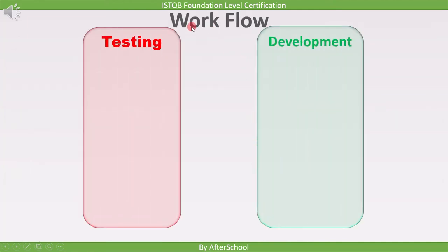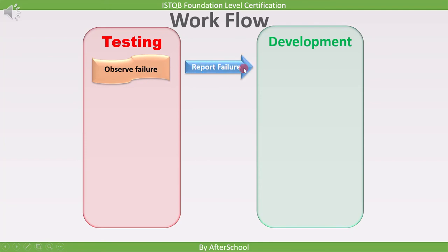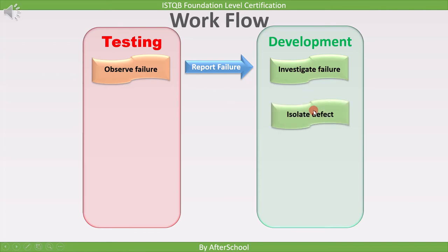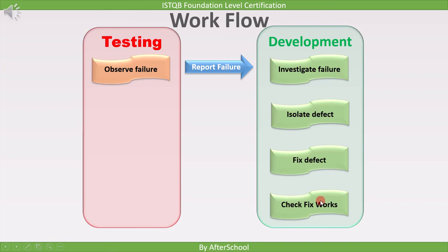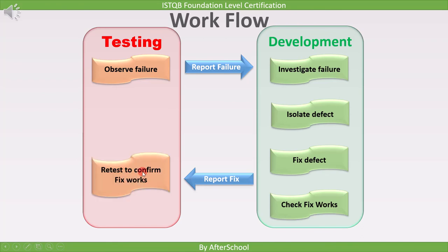Here we will discuss how tester and developer work with respect to the defect cycle. First, the tester finds the defects. Then the found defect is reported to the development team. After getting the defect report, the development team starts investigating the failure. While investigating the failure, the developer isolates the defect from the rest of the software. Once the defect is isolated, the developer fixes the defect and then checks if the defect is fixed or not. Once the defect is fixed, the fixed report is sent to the testing team. After getting the fixed report from the developer, the tester retests on the found defect to confirm if they were really fixed.